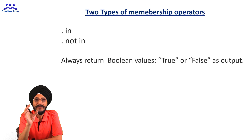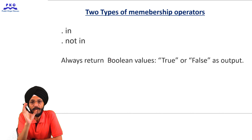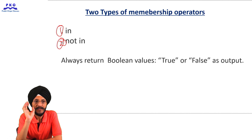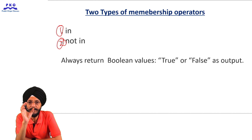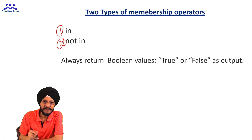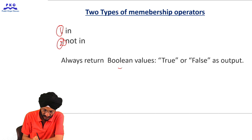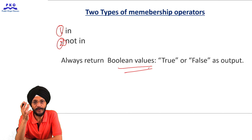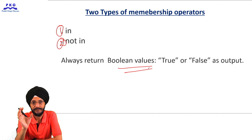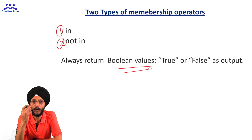There are two types of membership operators: 'in' and 'not in'. When we use membership operators in Python, they always return boolean values — meaning the output is either true or false.